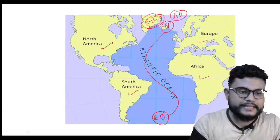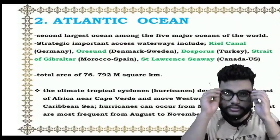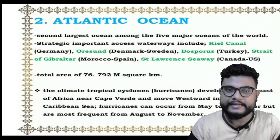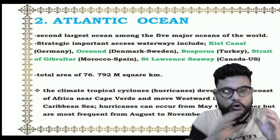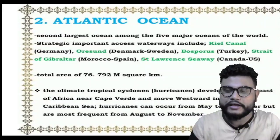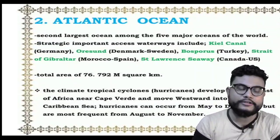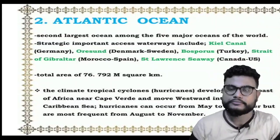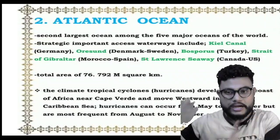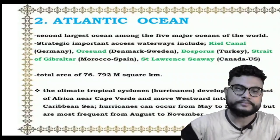Some important straits in the Atlantic Ocean: the Bosphorus Strait in Turkey, the Strait of Gibraltar between Morocco and Spain, and the Saint Lawrence Seaway in Canada. The total area is 76.792 million square kilometers. Due to the Atlantic Ocean, hurricanes — which we in India know as cyclones — also occur.